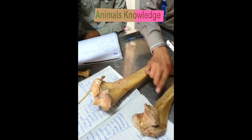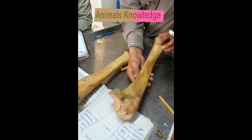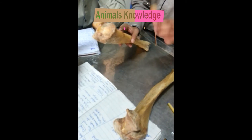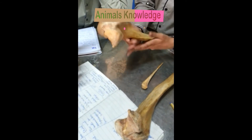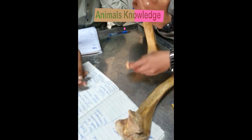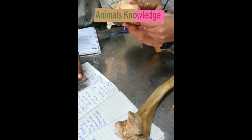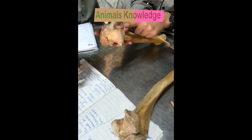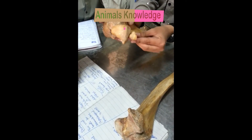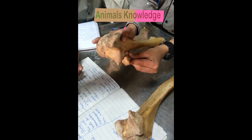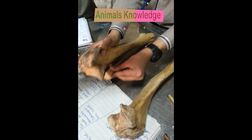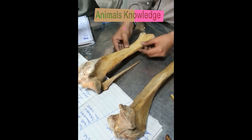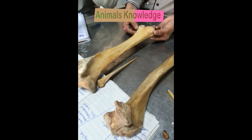The tibial crest is on the lateral side. The cranial tibial crest is also the caudal crest. The lateral crest also features the sulcus muscularis. This is the sulcus muscularis, and this is the lateral malleolus and medial malleolus.